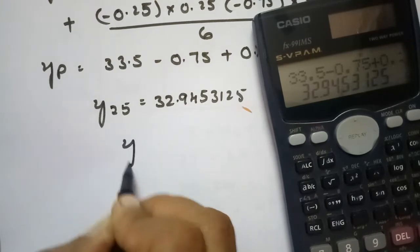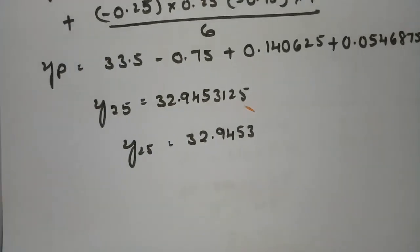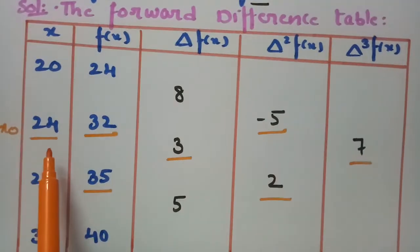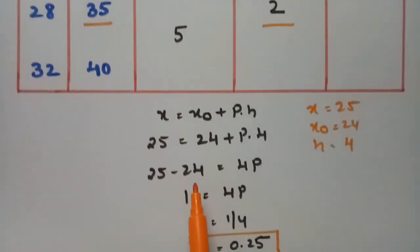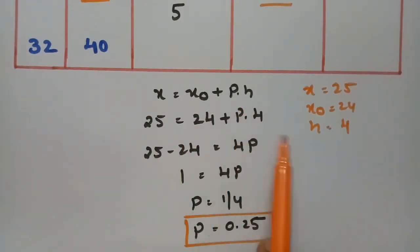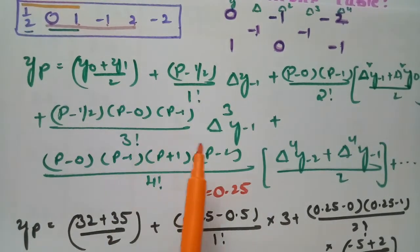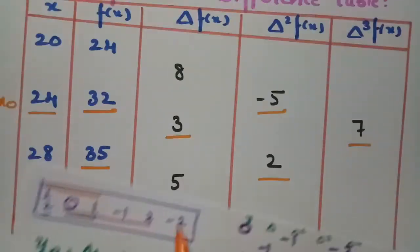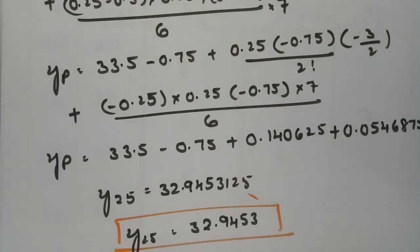So y(25) is approximately 32.9453. To summarize: we framed the forward difference table, identified x₀=24 as the nearest value to 25, computed h=4 and p=0.25, then applied Bessel's interpolation formula to get the answer 32.9453.